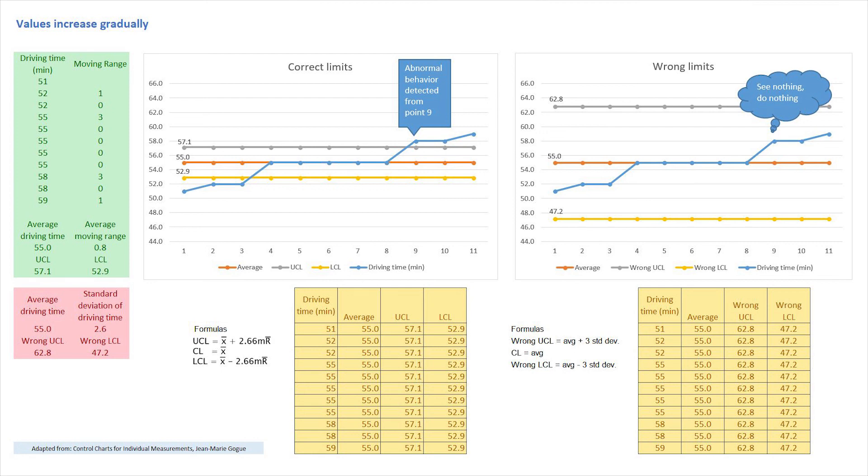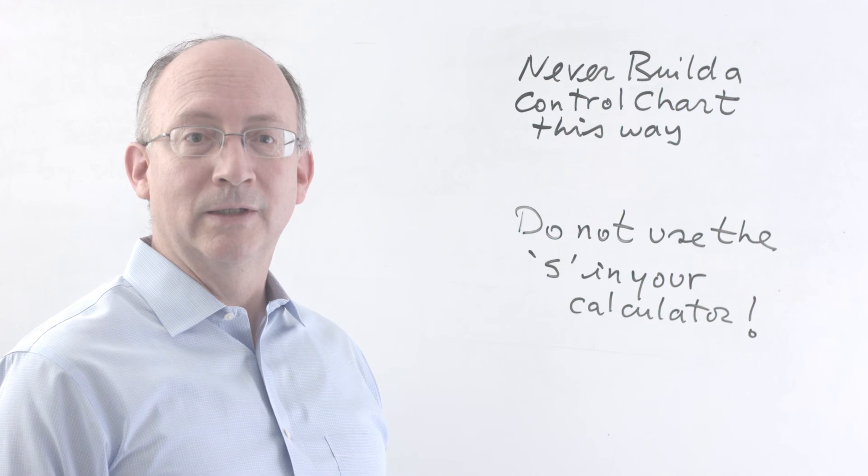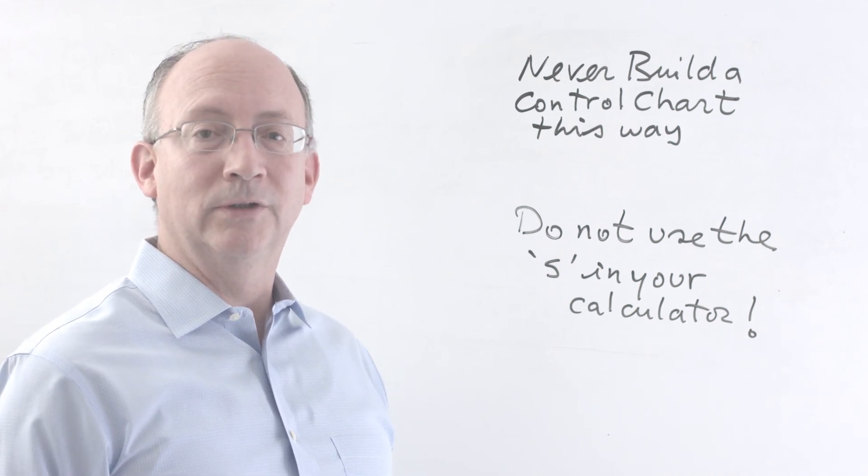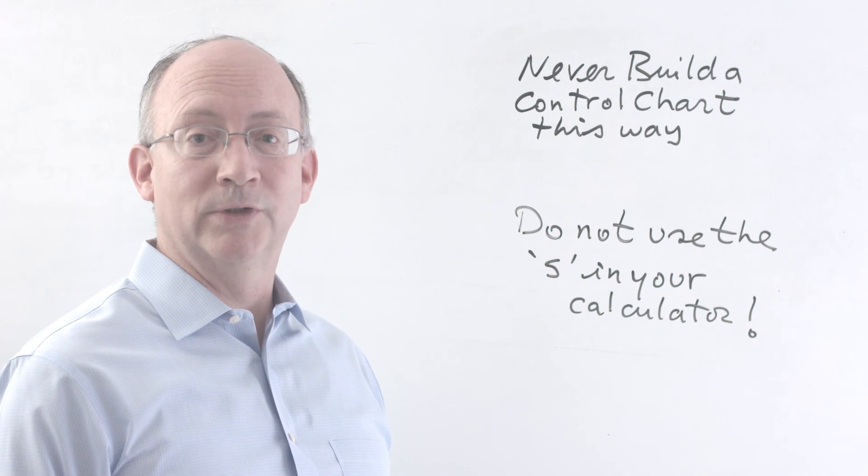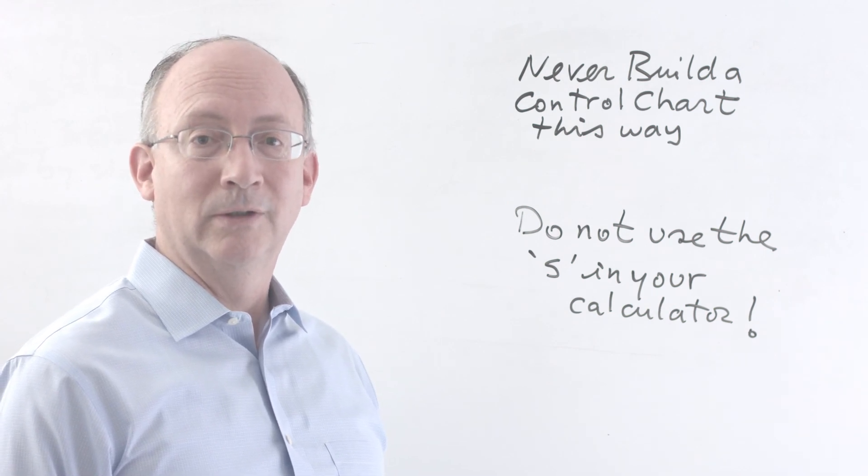The result of using S or STDEV to calculate control limits results in limits that are too wide and insensitive to out of control observations. In conclusion, only control charts created correctly can detect abnormal process behavior. This presentation is based on a one-page paper presented by Jean-Marie Gogh of the French Deming Association. Thank you for your time.